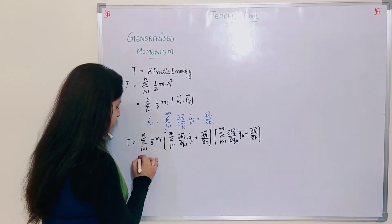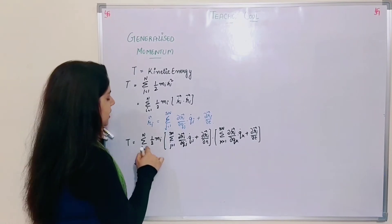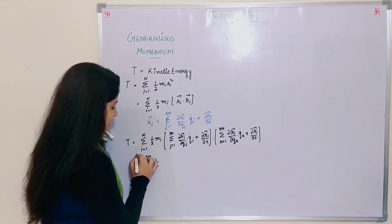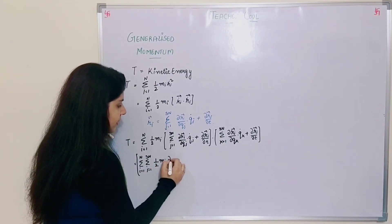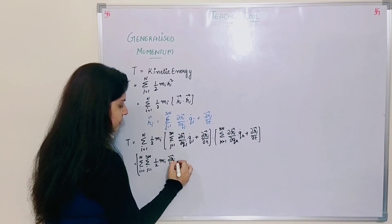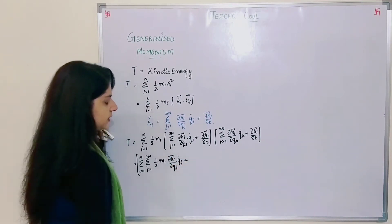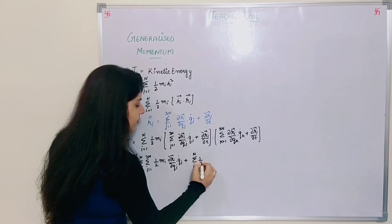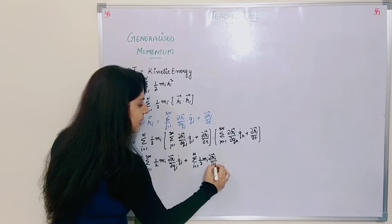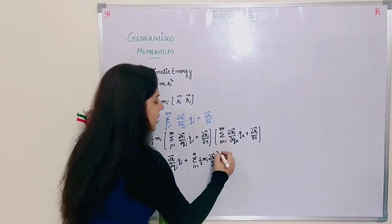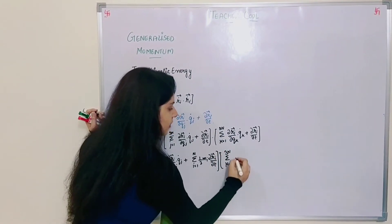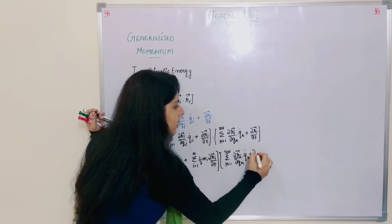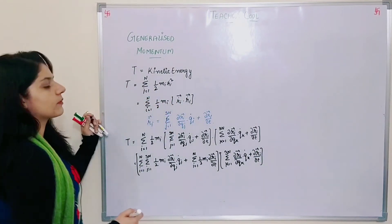Now we'll open these brackets. Summation i equals 1 to n, summation j equals 1 to 3n, half m_i del r_i vector by del q_j into q_j dot, plus summation i equals 1 to n, half m_i del r_i vector by del t. The second bracket as is: summation k equals 1 to 3n, del r_i vector by del q_k into q_k dot plus del r_i vector by del t.